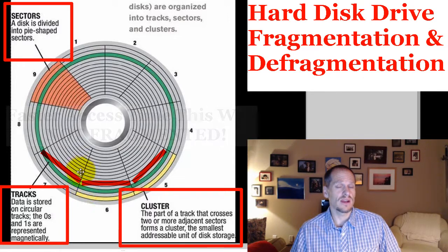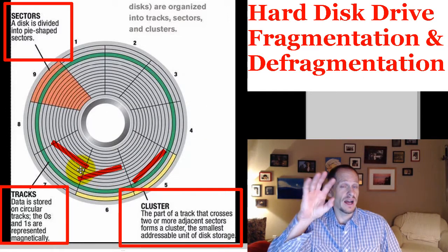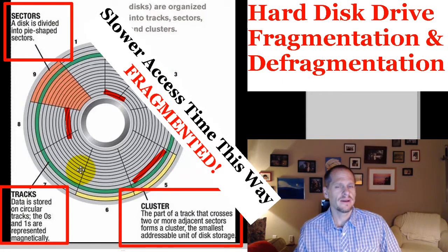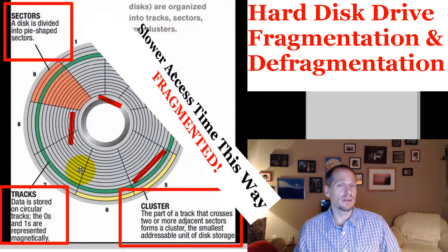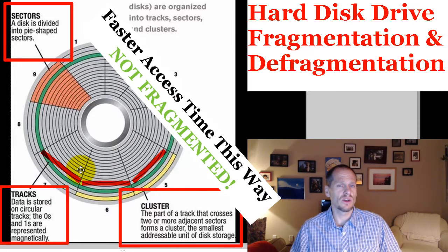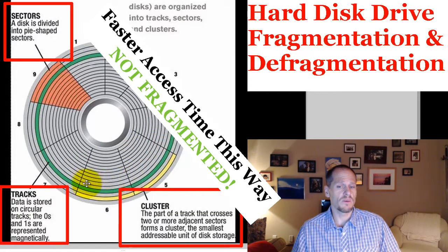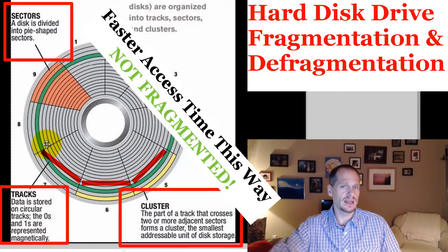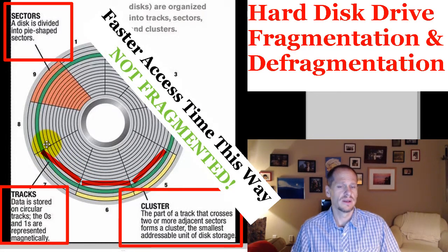When you have a fragmented hard drive, the zeros and ones for files get fragmented all over the place. When you defragment your hard drive, it puts everything into closer proximity, so all the zeros and ones for one file are right next to each other and the read-write head can gather them up in one swoop instead of jumping all over the place.